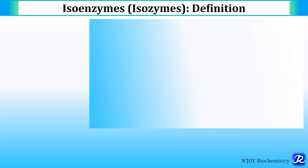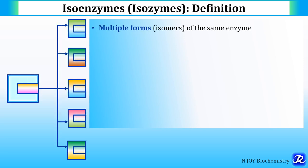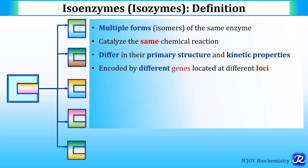Isoenzymes are also called as isozymes. These isoenzymes are the multiple forms of the same enzyme — the same enzyme exists in multiple forms. But all the isoenzymes catalyze the same chemical reaction, and they differ in their primary structure and kinetic properties. They are encoded by different genes located at different loci.